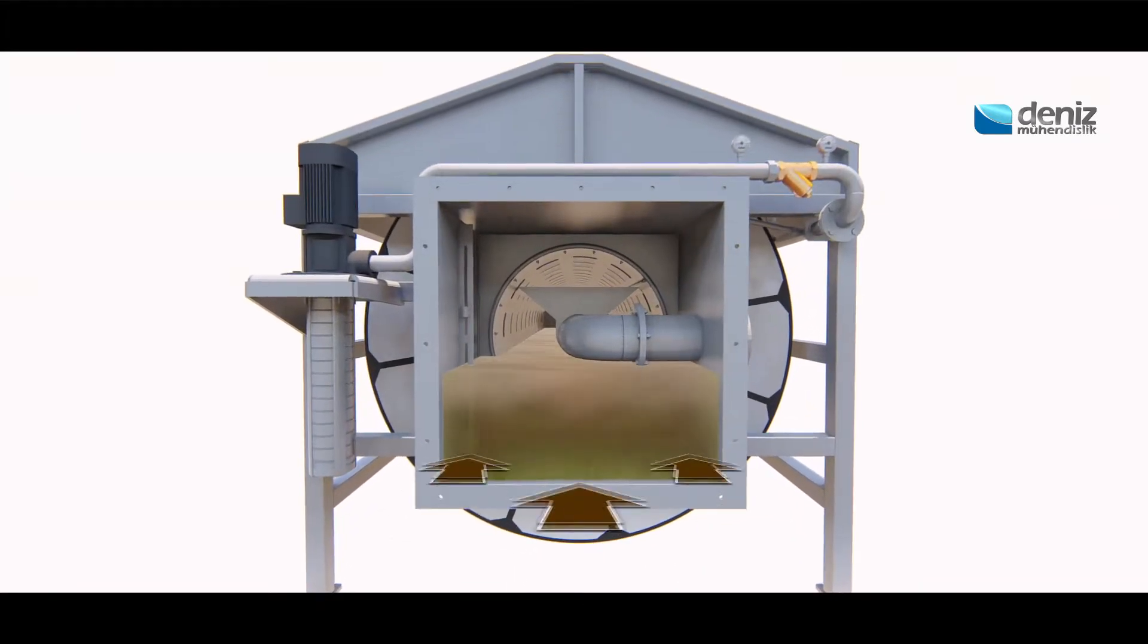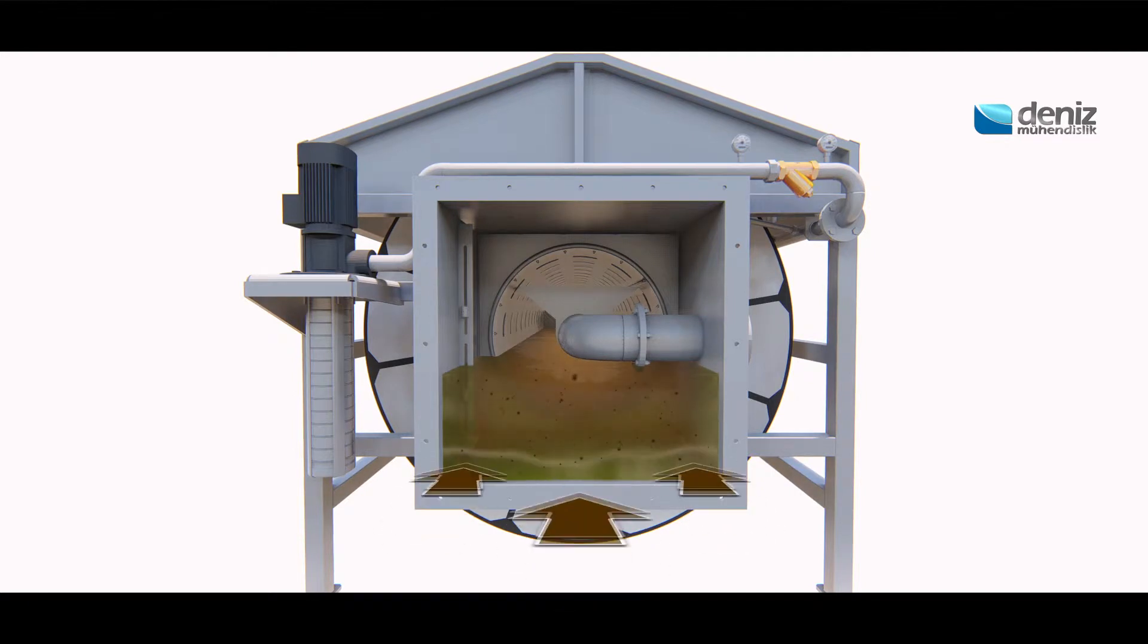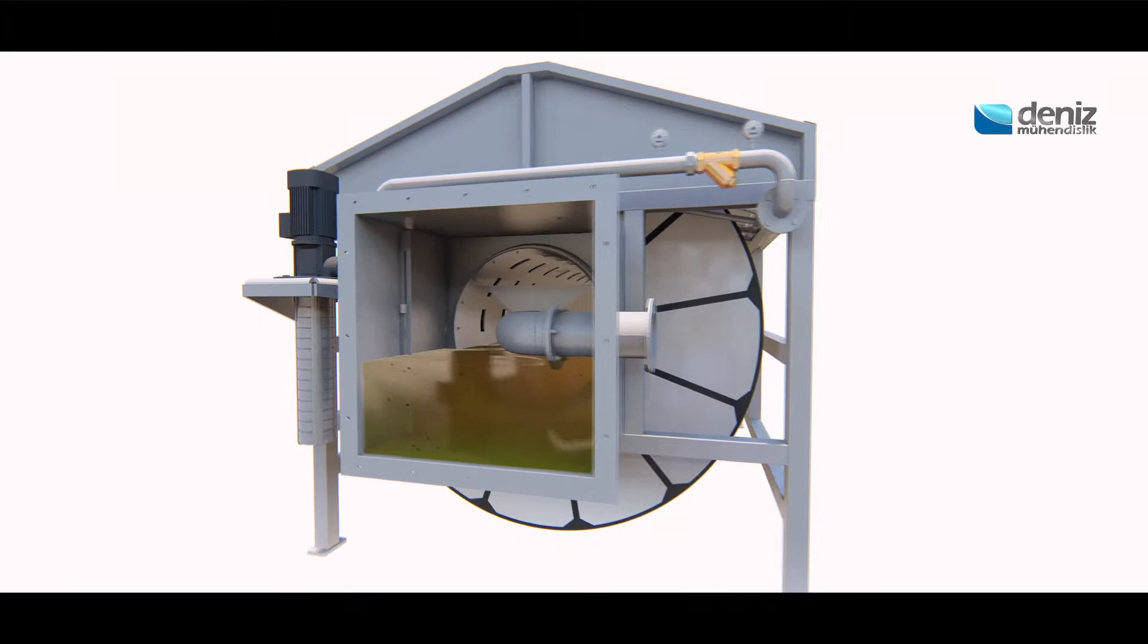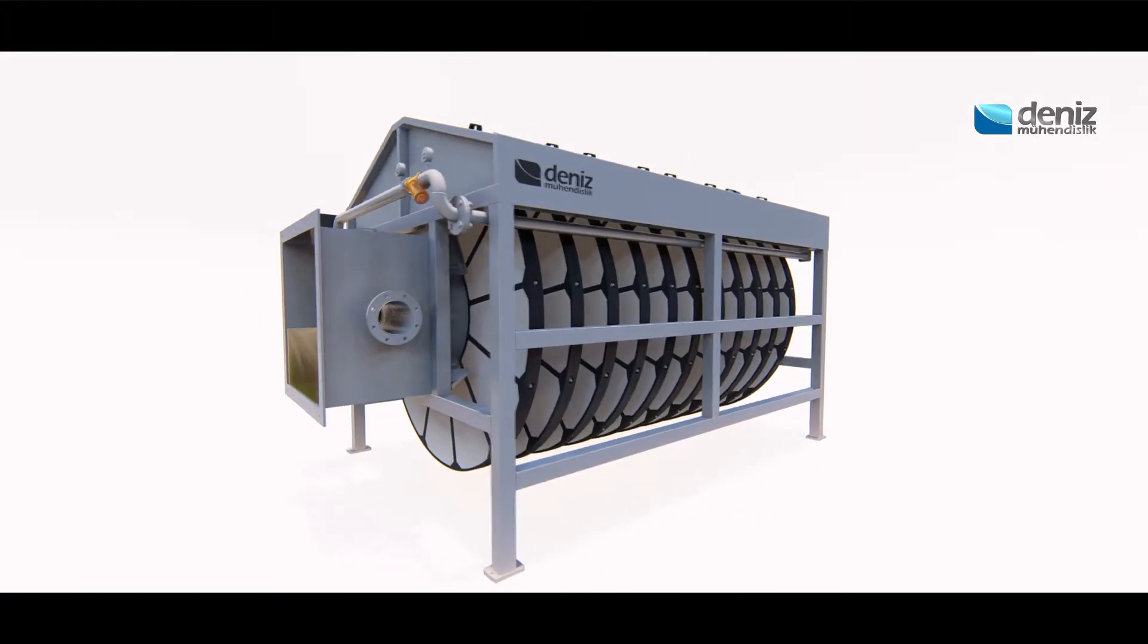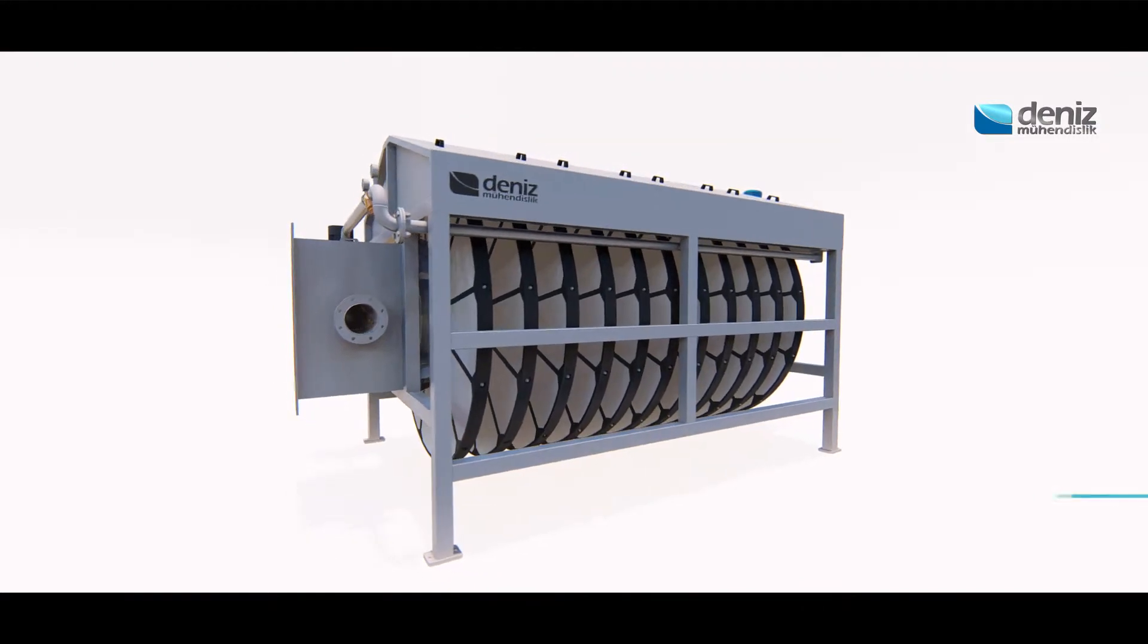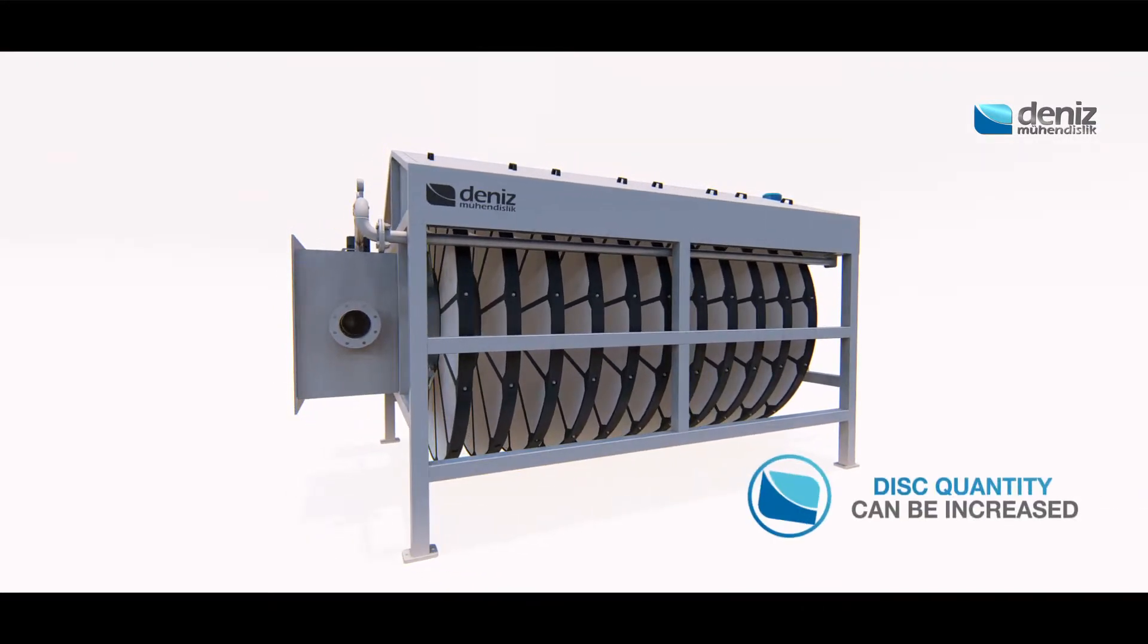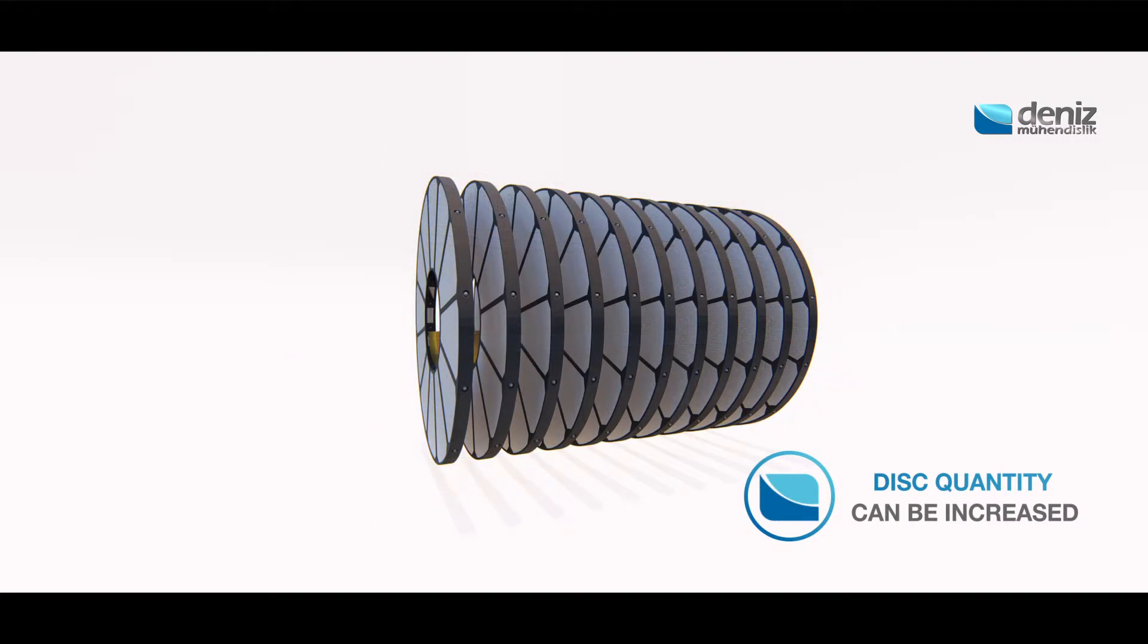Water to be filtered flows to the main shaft through the inlet chamber. It is capable of filtering from 250 to 1,800 cubic meters per hour in a single unit thanks to its modular design.